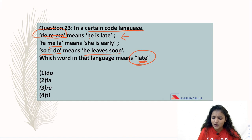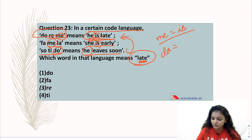You will compare it to other sentences based on common words. 'He is late' and 'she is early' - common word is 'is'. The common word in 'do re me' and 'fa me la' is 'me'. So 'me' equals 'is'. Then compare 'he is late' and 'he leaves soon' - common word is 'he'. In the code language, the common word is 'do'. So 'do' equals 'he'. In 'do re me', 'do' is 'he' and 'me' is 'is', so 're' is the word which is 'late'.